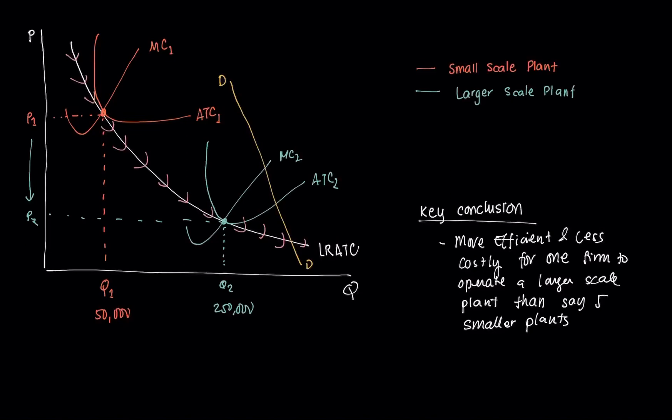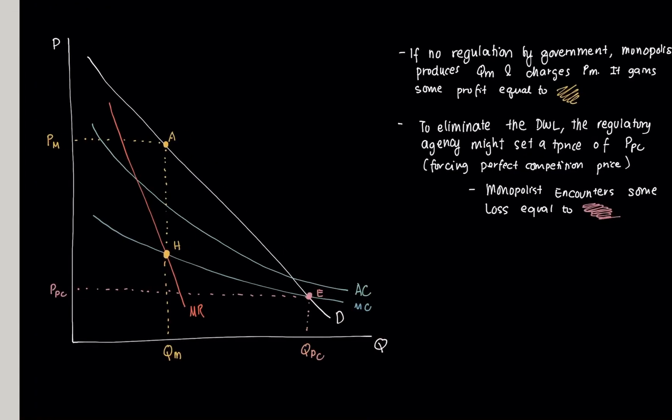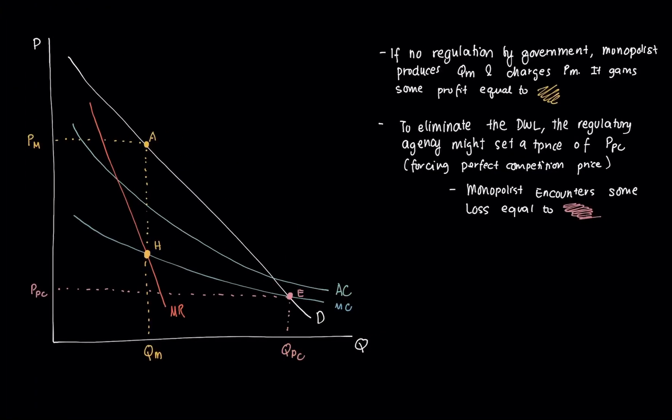Let's dive into the concept a bit more. We have a graph here, which is another case of a natural monopoly. In the absence of any government regulation, the monopolist will produce QM and will charge PM. We have here a demand curve, an average cost curve, a marginal cost curve, and a marginal revenue curve.